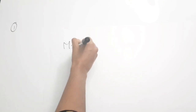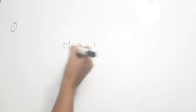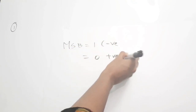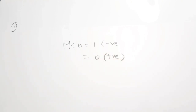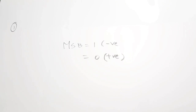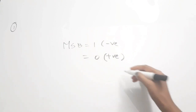Whether a number is negative or not in binary numbers, we identify using the MSB bit. If MSB is equal to 1, then the number is negative. If MSB is equal to 0, then it is positive. This is the normal convention we use in digital electronics. So the correct answer is option A, MSB.